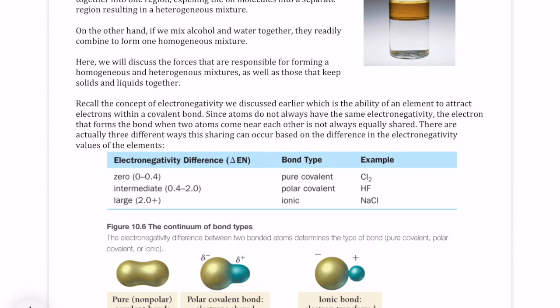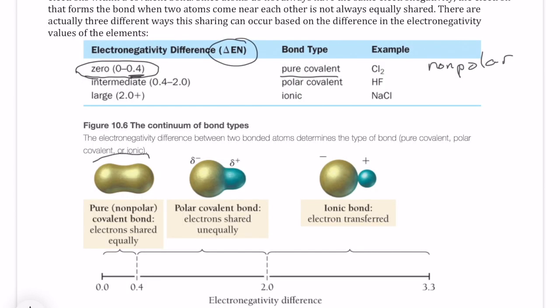Now, this actually results in different types of covalent bonds based on the electronegativity of the two elements that are being bonded together. If the electronegativity difference, which we call delta EN, is between 0 to 0.4, then we would call that a pure covalent bond or a nonpolar covalent bond. As illustrated in this drawing, the electrons that are being shared by those two elements are being shared pretty uniformly across the two elements. So nobody has a claim on that electron.